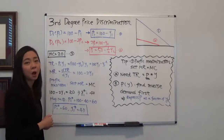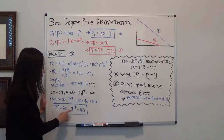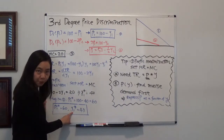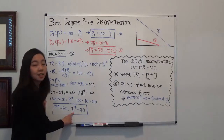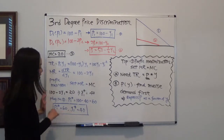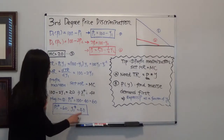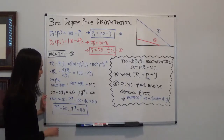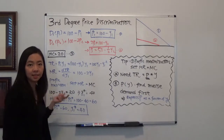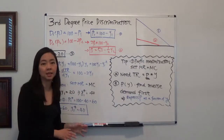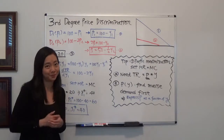We have now found the optimal price and optimal quantity for the first market. The optimal price is 60 and optimal quantity is 40. For the second market the approach is exactly the same, and I'm going to leave it for you as a practice.